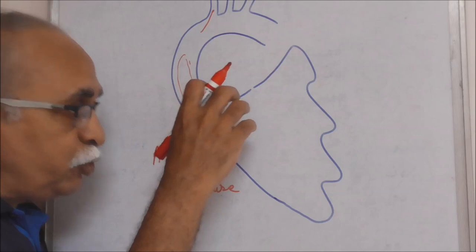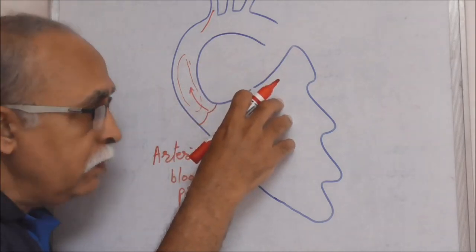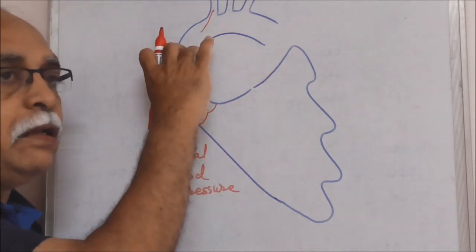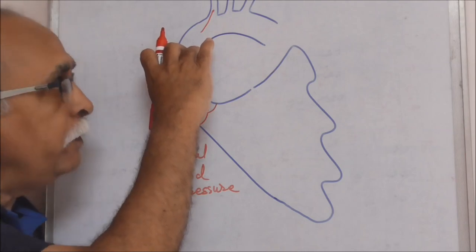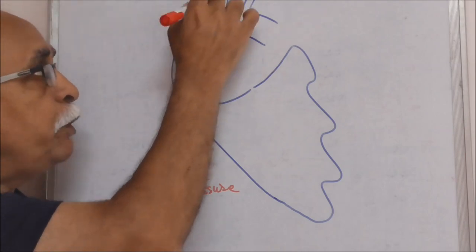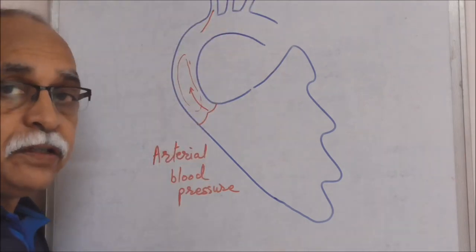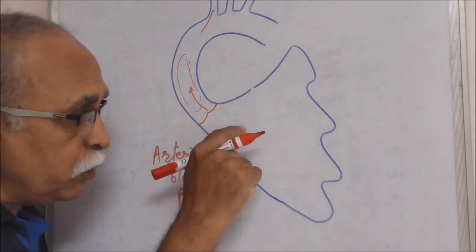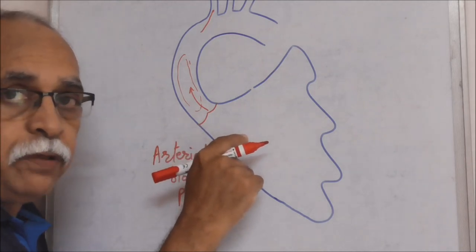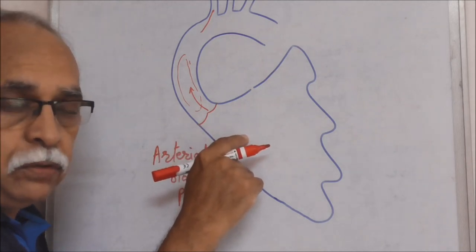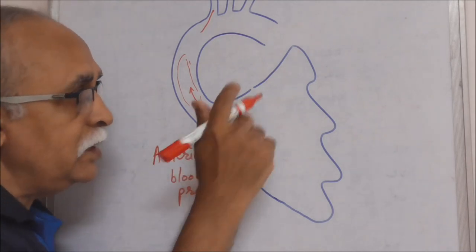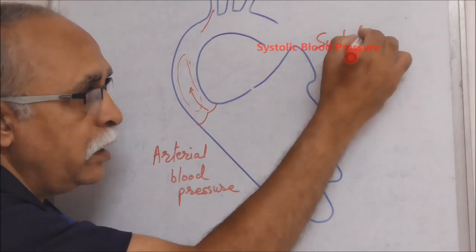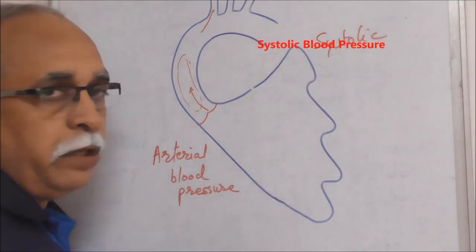Just after the systole, when the amount of blood contained in the aorta is more, the pressure exerted would also be more. This is because of the systole of the ventricle, so this is named as systolic blood pressure.